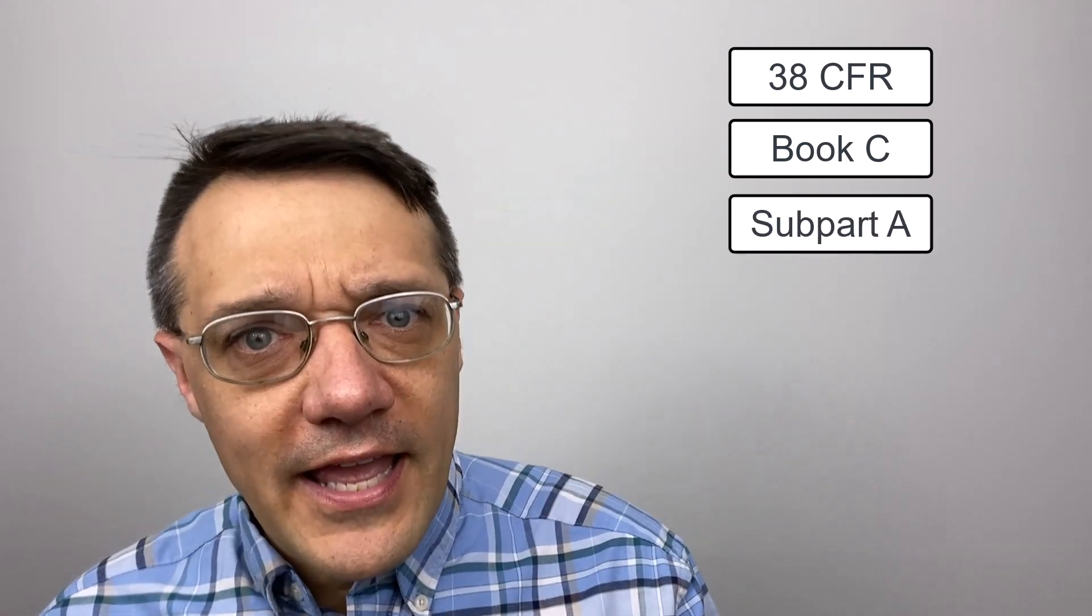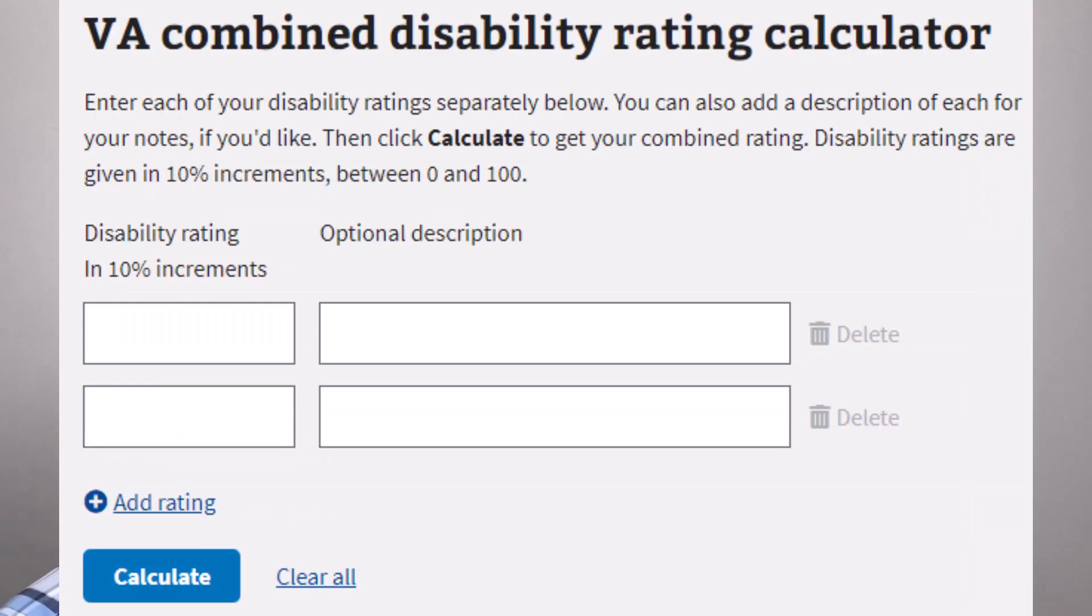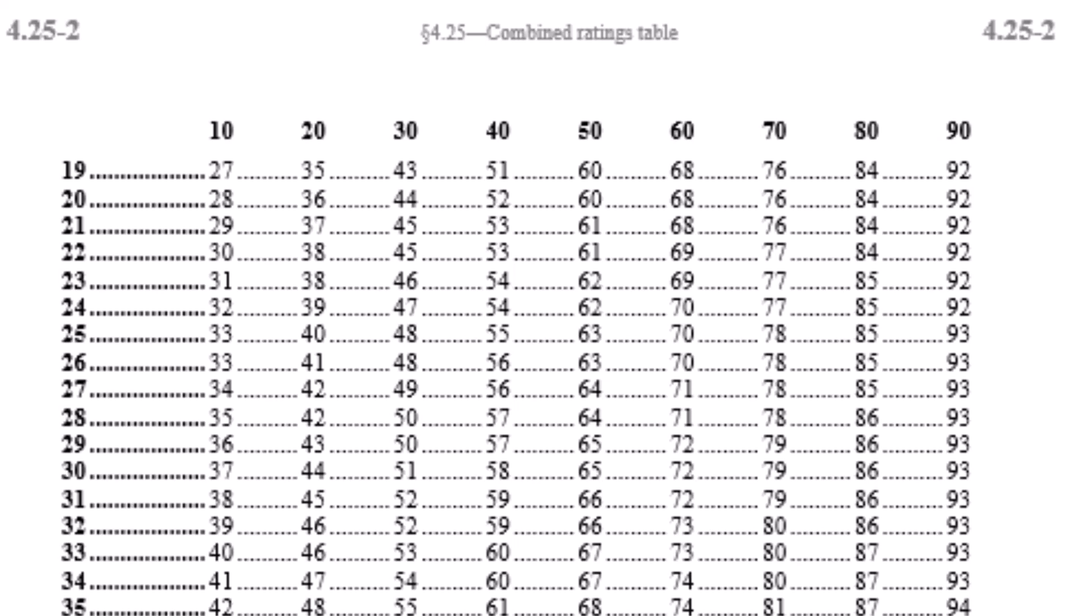All right, let's do this by the book. And when I say by the book, what I mean is Title 38 of the Code of Federal Regulations, Book C, Subpart A, Section 4.25, the Combined Ratings Table. You can find this exact same table and explanation on the VA website. In fact, they've even got a calculator that I'll show to you in a minute. But for now, let's go by the book.